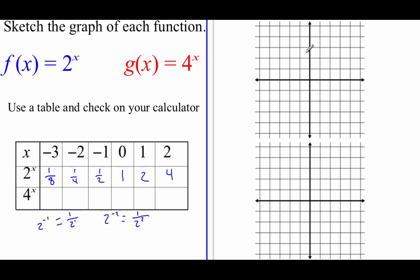Now I'm going to take all of those ordered pairs and plot them on this graph. So at negative 3 for our x value, we're at 1 eighth — just above that x-axis. At negative 2, we were at a fourth, so the graph is pretty flat right now. At negative 1, we were up at a half. At 0, we were up at 1. At an x value of 1, we were up at 2. And at an x value of 2, we were up at 4. So we get this kind of look for our exponential graph.